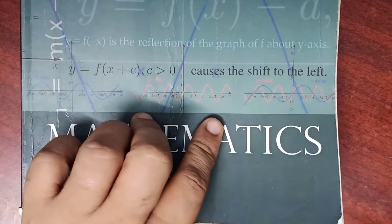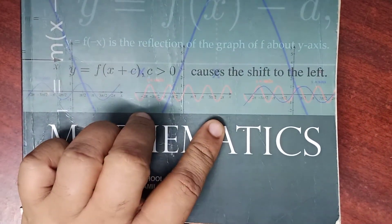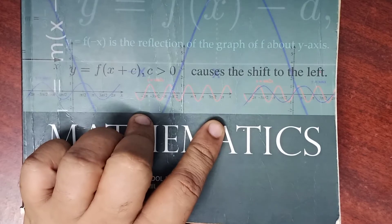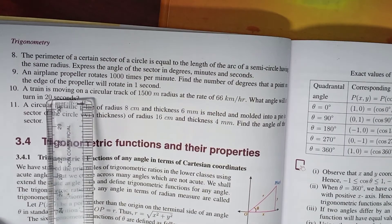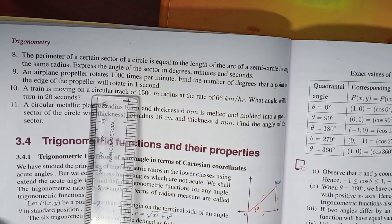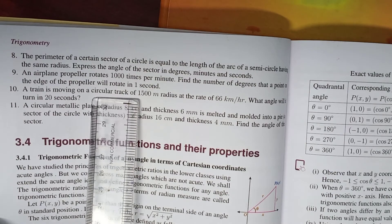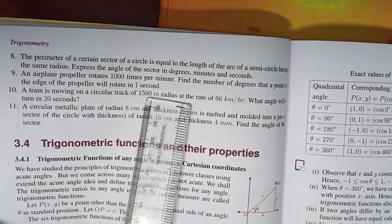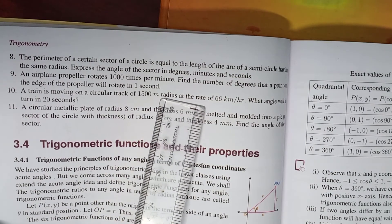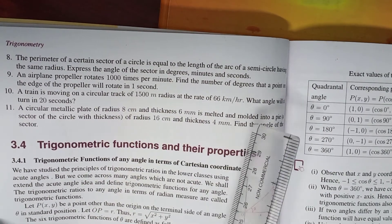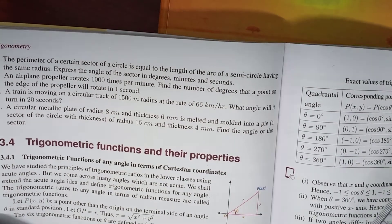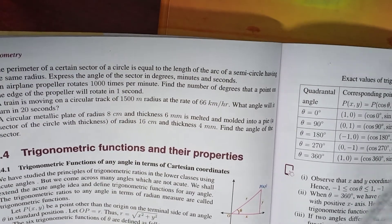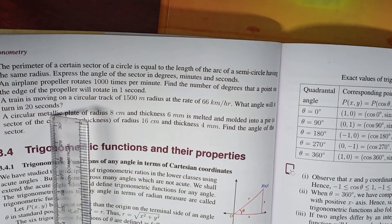Now, Problem No. 10. A train is moving on a circular track of 1500 meter radius at the rate of 66 km per hour. What angle will it turn in 20 seconds?